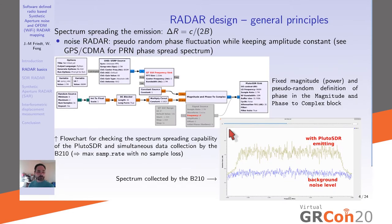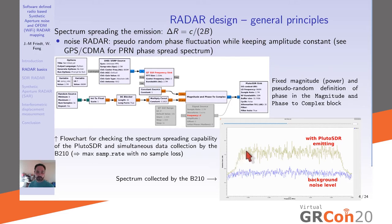To implement spectrum spreading, a random source with DC offset removed modulates the phase of the carrier, producing a constant-amplitude signal with a spread spectrum. As shown in the Qt GUI frequency display, when the PlutoSDR output is modulated at 2.7 megasamples per second — limited by the communication bandwidth with the PlutoSDR — the result is a nicely flat spectrum across the whole bandwidth, demonstrating successful spectrum spreading using a pseudorandom sequence modulating the phase of the output signal.